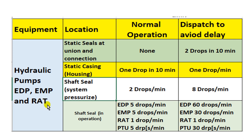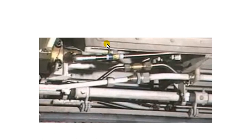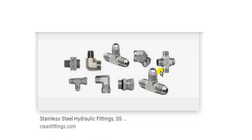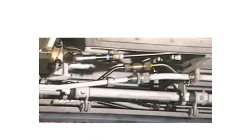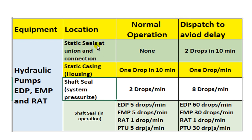Take care from the area on your head. The location here: static seals at union and connection. These are the connections — tubes and tube connections shown here — and these are the unions that connect tube to tube and others.